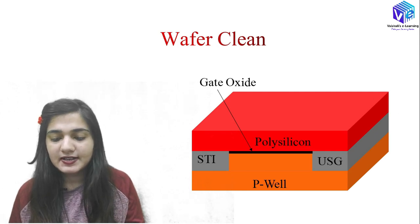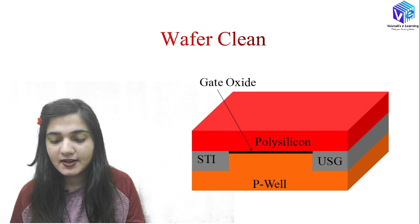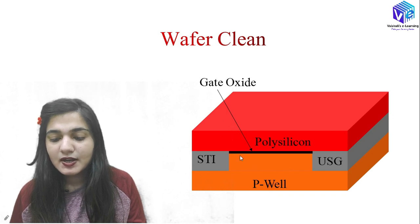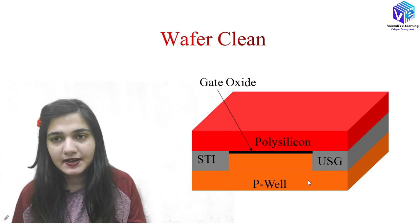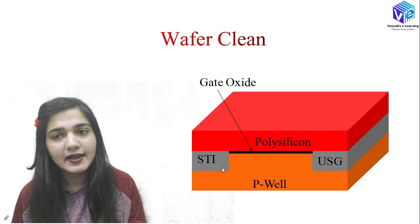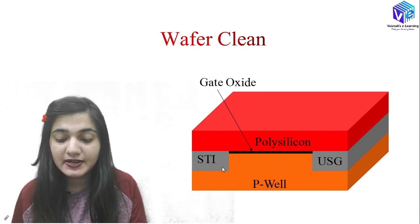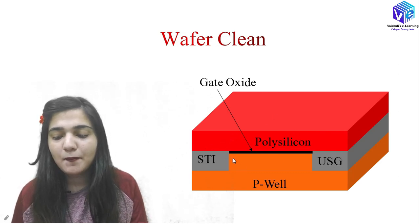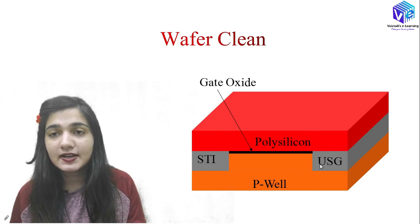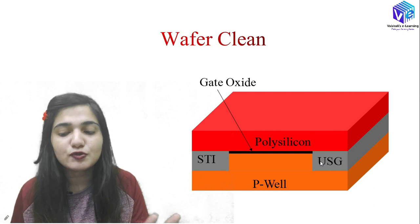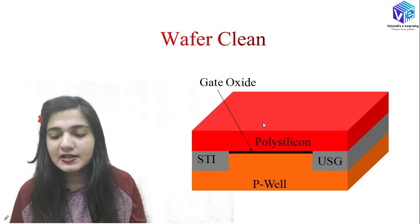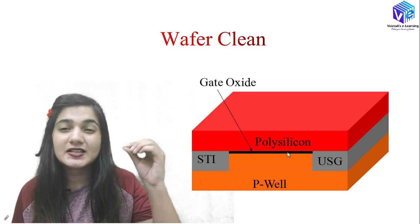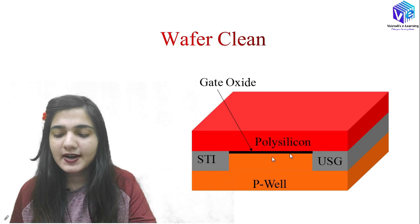In the wafer cleaning step, we have the P-well and the substrate. We have the STI layer and USG layer — both used for isolation purposes. We have the polysilicon layer, and the gate oxide shown as a very thin black line. First we clean the uppermost polysilicon surface, then do the pre-bake. After cleaning, there may be some deionized water left behind which we evaporate as well.